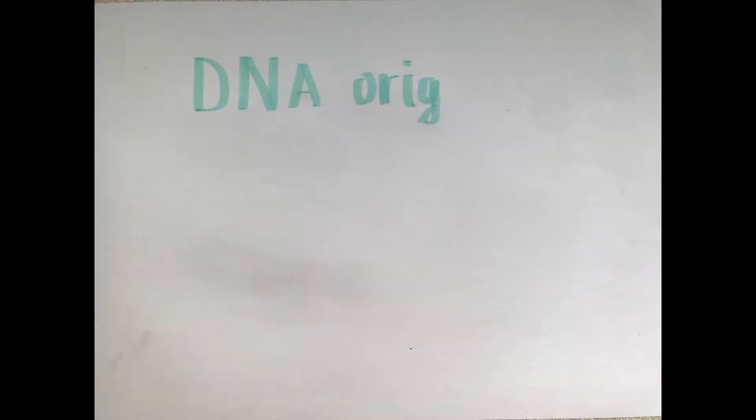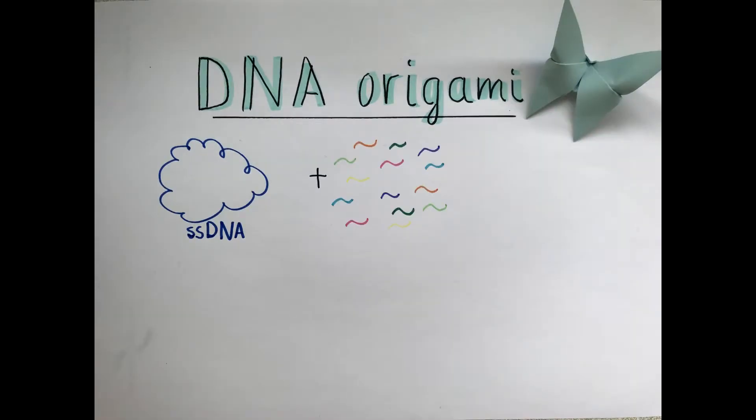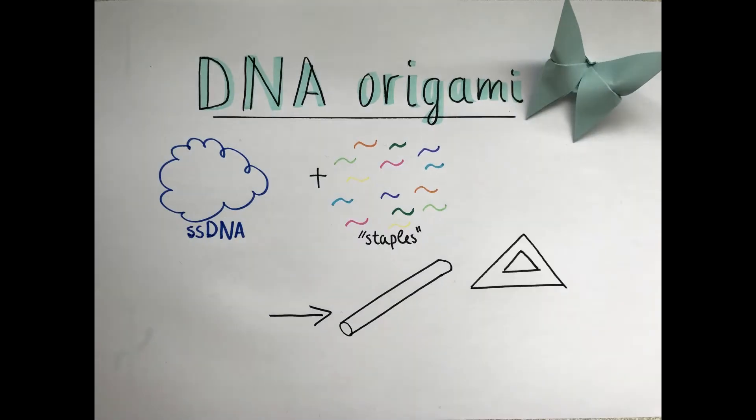DNA origami are nanostructures inspired by the Japanese art of folding paper. They are built using a long, single-stranded DNA that is given its specific shape and held together by short oligonucleotides as staples, resulting in a double-stranded final structure.